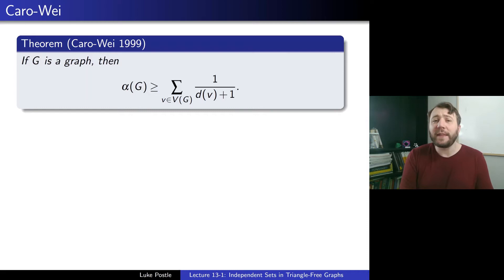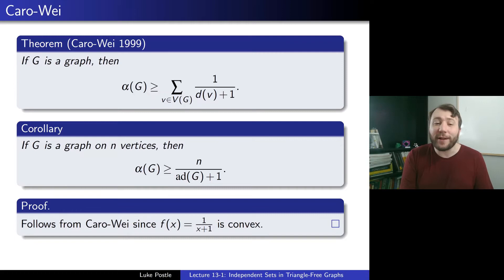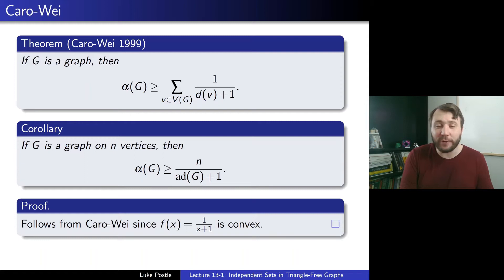The claim is that this gives a corollary: if G is a graph on n vertices, then alpha(G) is at least n over (average degree of G plus 1). This follows from Karo-Way since f(x) = 1/(x+1) is a convex function. So when we take that sum, we can replace it by n times the function evaluated at the average degree, giving n over (ad(G) plus 1).